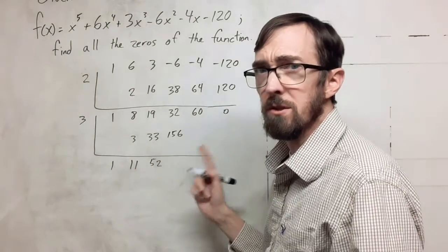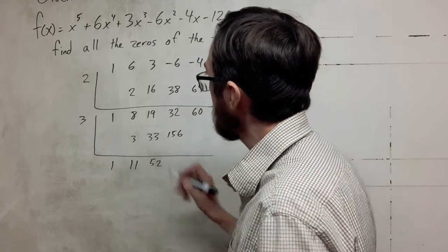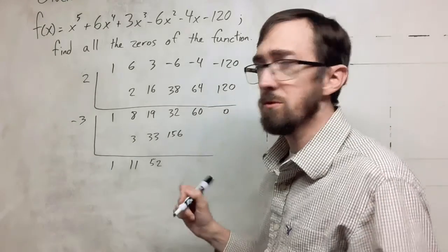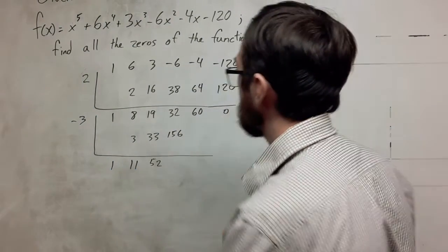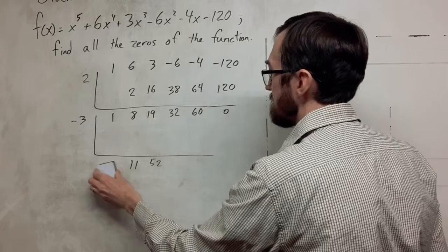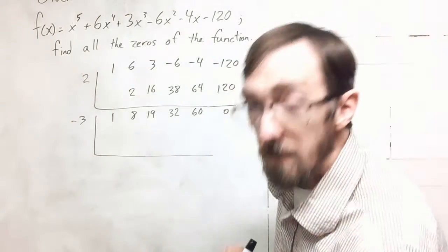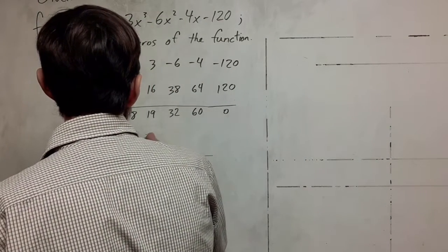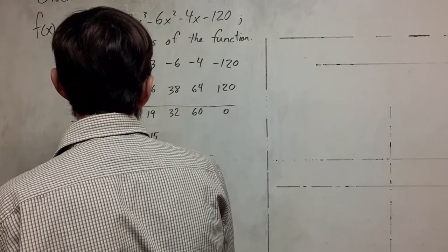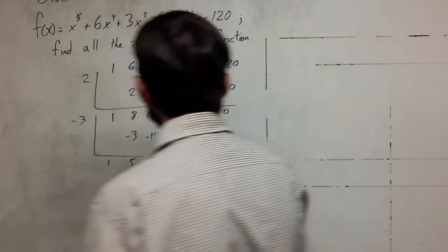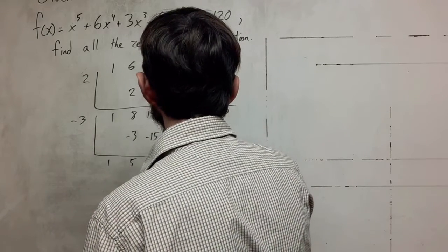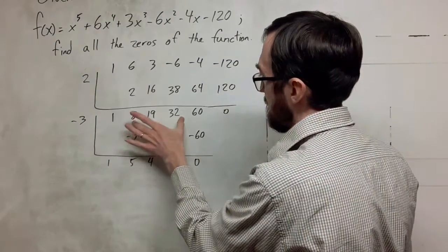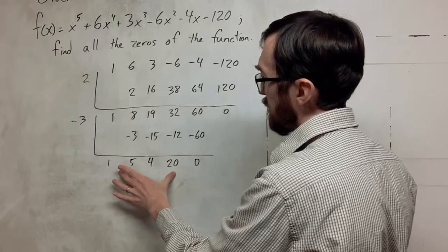These numbers are getting pretty big, so I don't think 3 is going to work here either. So I'm going to switch to a negative 3. And maybe I needed to switch to a negative 2 also here. So I'm going to try negative 3 here. We ended up with a 0 again, which means that negative 3 does divide this. And this is the depressed polynomial from that division.